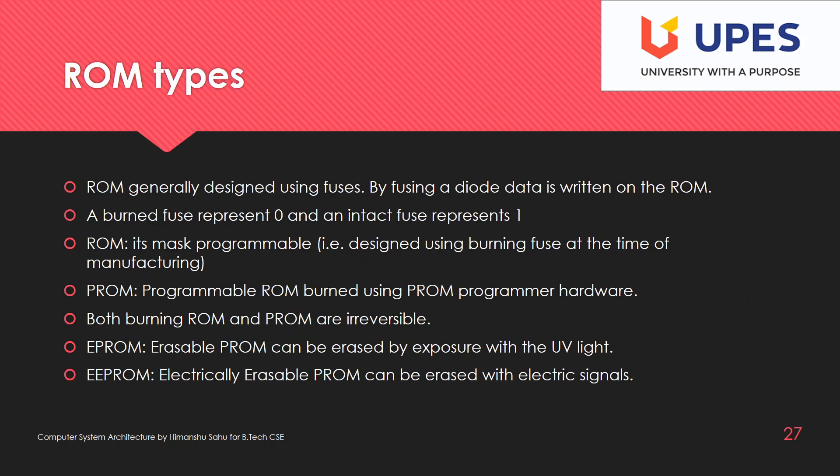ROM is a permanent storage that uses fuses — specifically the property of Zener diodes. A Zener diode has a threshold voltage; when that voltage is exceeded, the diode fuses. To write a zero, we supply a voltage higher than the threshold voltage, fusing the diode. To represent one, we do not fuse it, creating an arrangement like 0,1,0,1,1,1,0.